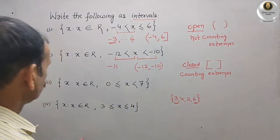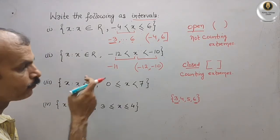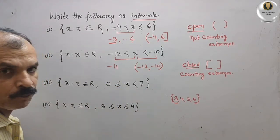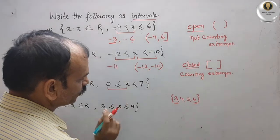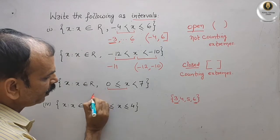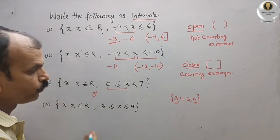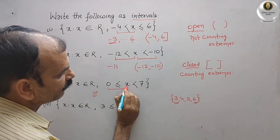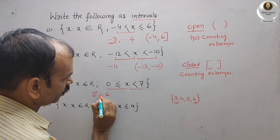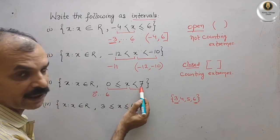The third question: the set of all x such that x belongs to the real numbers and 0 ≤ x < 7. Here, x should be greater than or equal to 0, so we include 0. And x is less than 7, meaning we go up to 6 but do not count 7. So we are counting 0 but not counting 7.